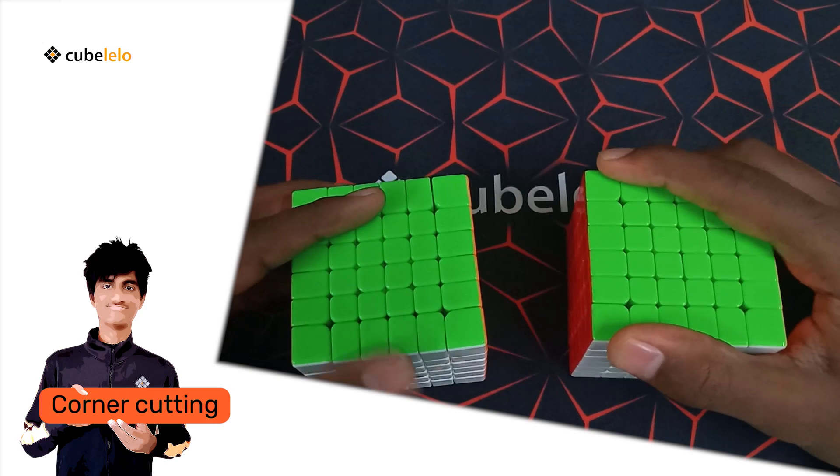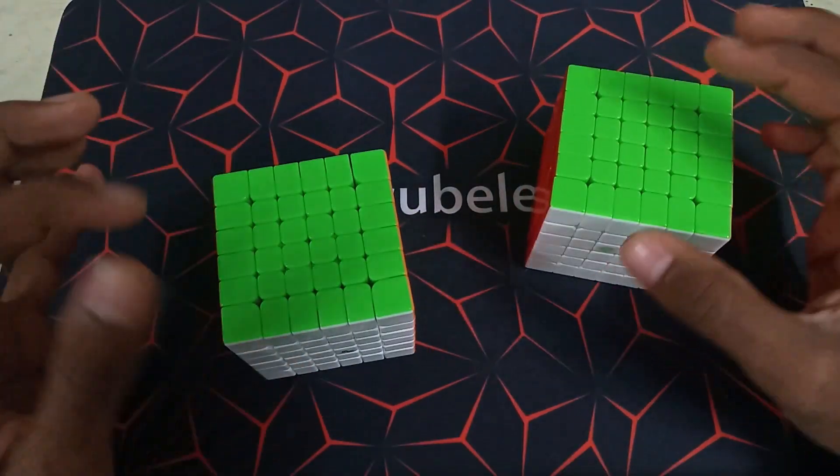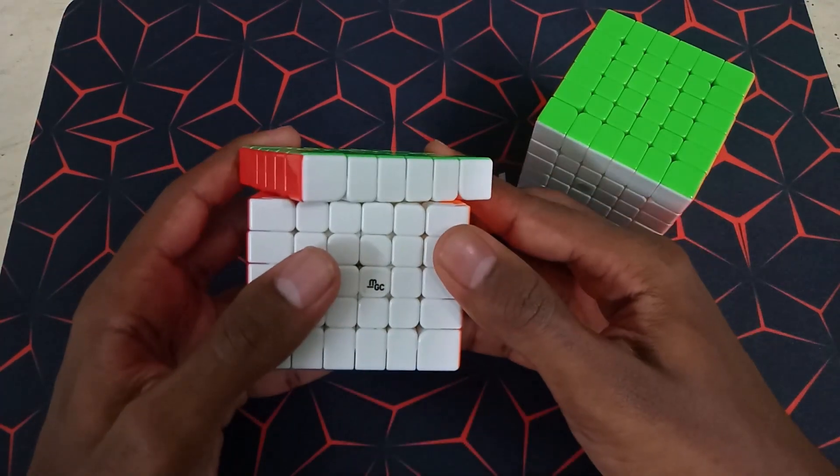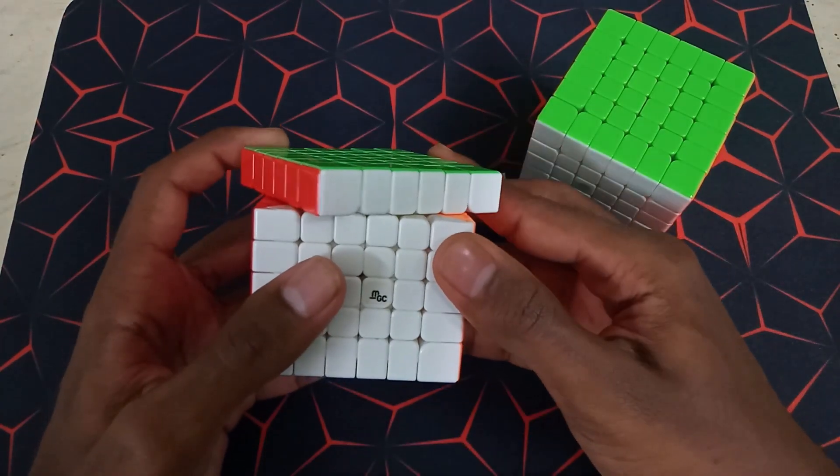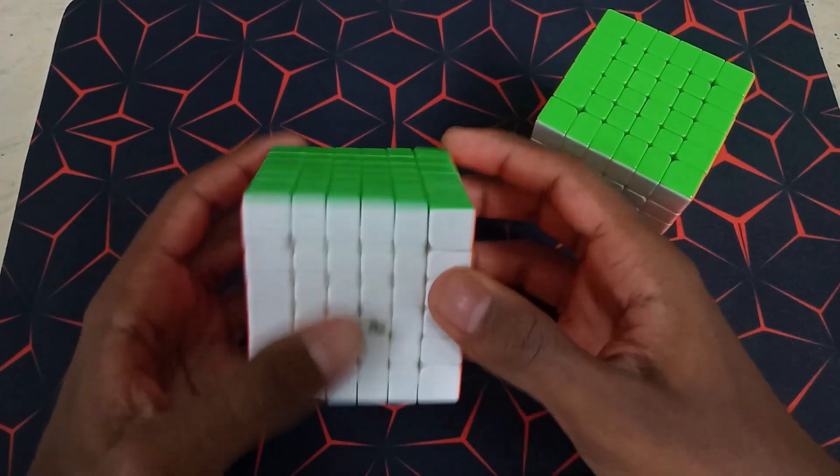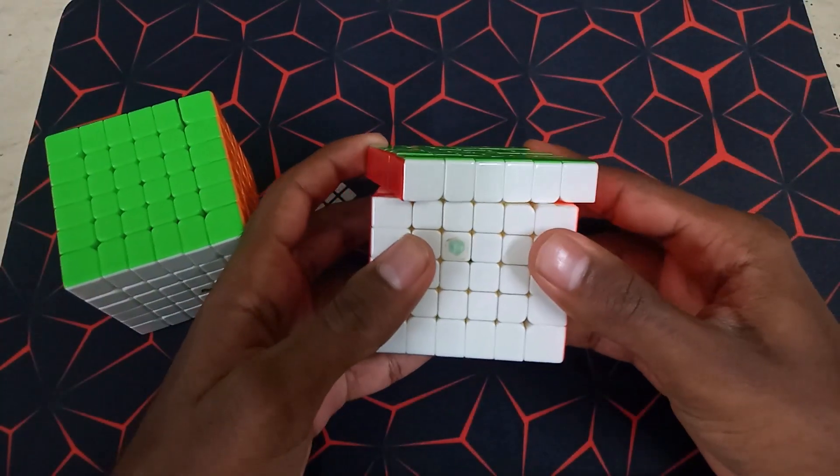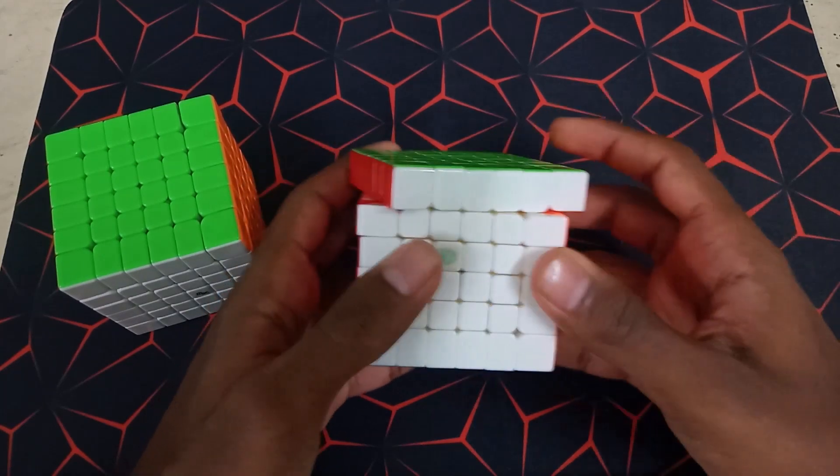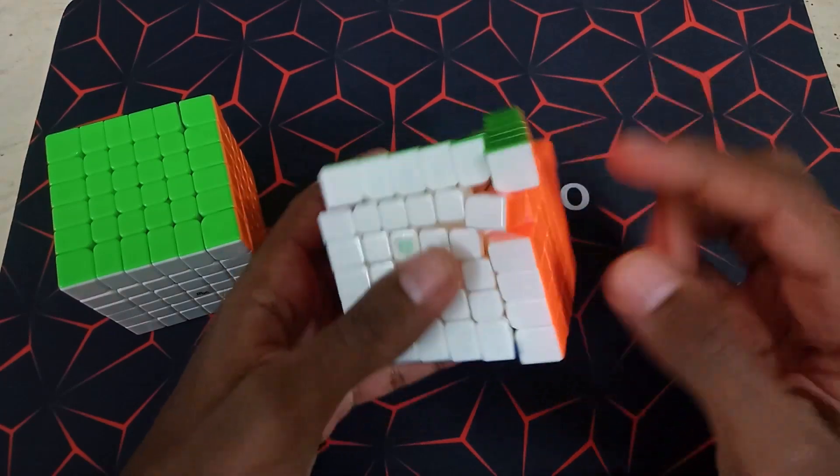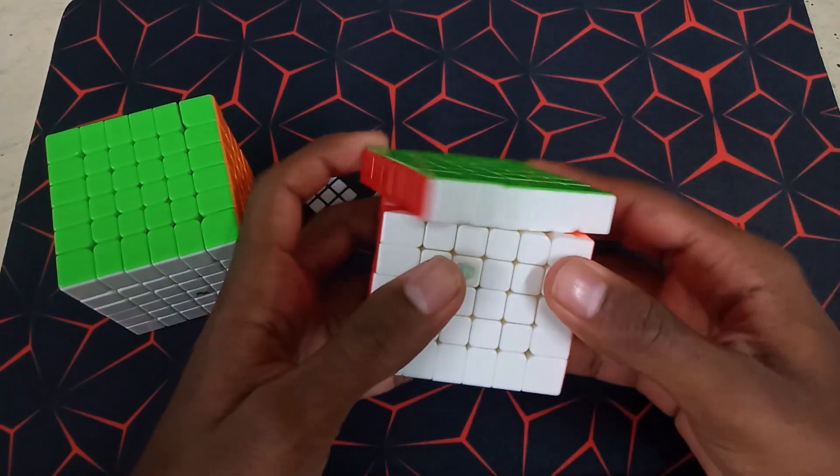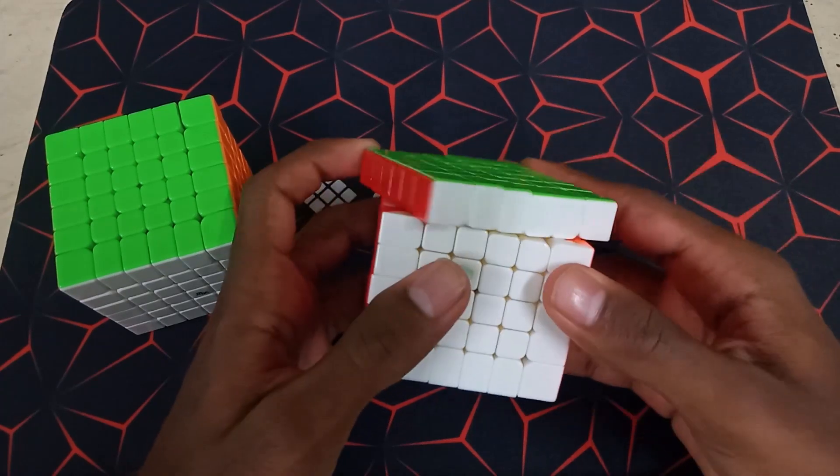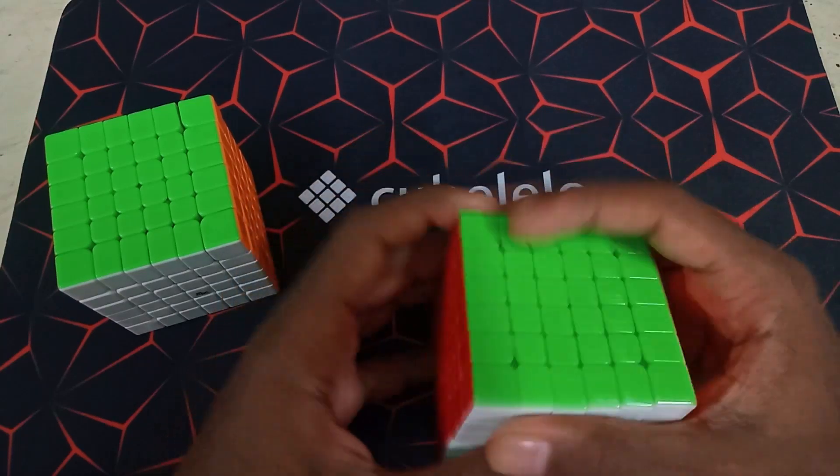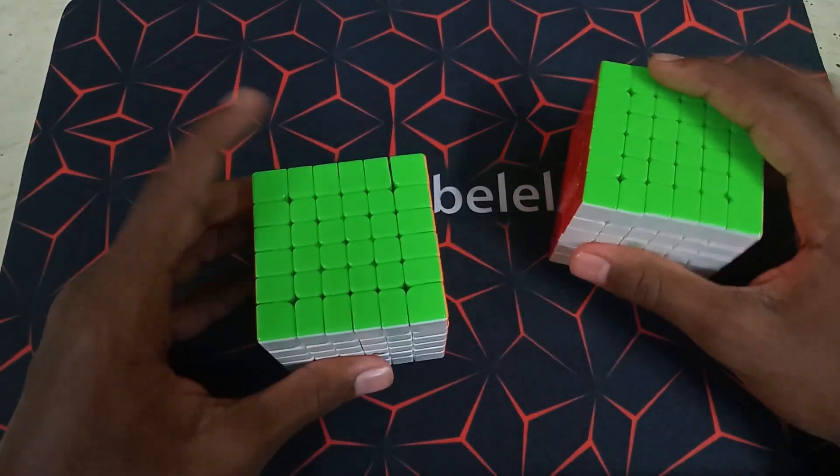So now we'll move on to corner cutting. The corner cutting on both puzzles is around the same, but the MGC is slightly better, like very slightly. So as you can see, this is about one and a half cubes and the MGC can pretty much cut it every time. But when we go to the Shadow M, one cube is easy, but a little more than that, and you start having those annoying internal lockups. So that's like a downside of the Shadow M, which can probably be fixed by tensioning it right. But again, when you tension it weirdly, it sort of loses stability, which is not a great thing.